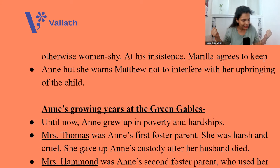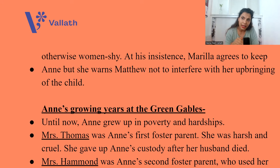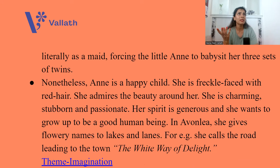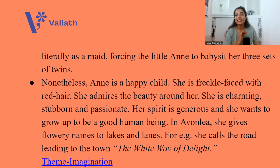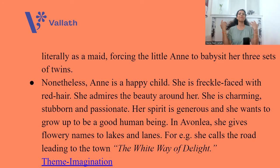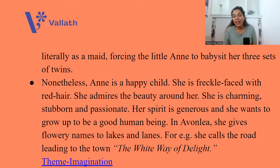Now let's talk about Anne's growing years at Green Gables. Until now, Anne grew up in poverty and hardship. Mrs. Thomas was Anne's first foster parent — harsh and cruel, she gave up Anne's custody after her husband died. Then Anne went to Mrs. Hammond, her second foster parent, who used her literally as a maid, forcing little Anne to babysit her three sets of twins. Imagine — she's just 11 years old and has already experienced shifting houses, not feeling at home. Nonetheless, Anne is a happy child. She is freckle-faced with red hair. She admires the beauty around her and is charming, stubborn, and passionate. Her spirit is generous, and she wants to grow up as a good human being.